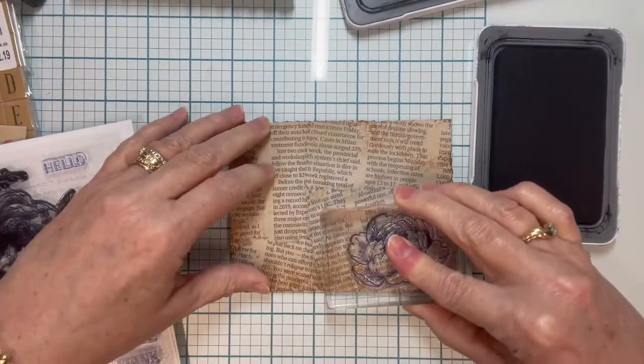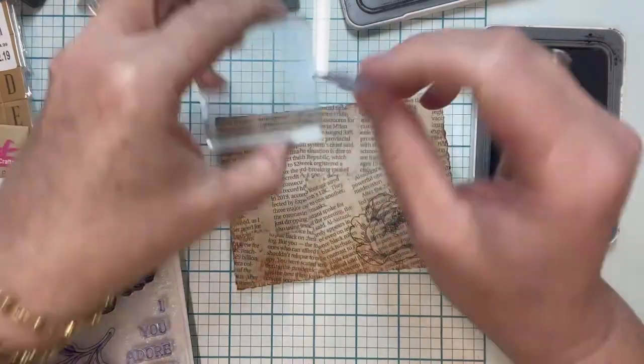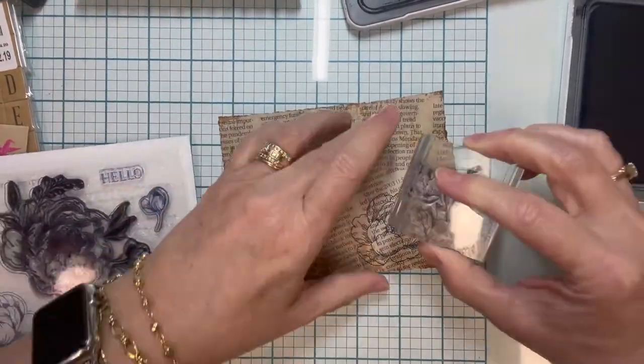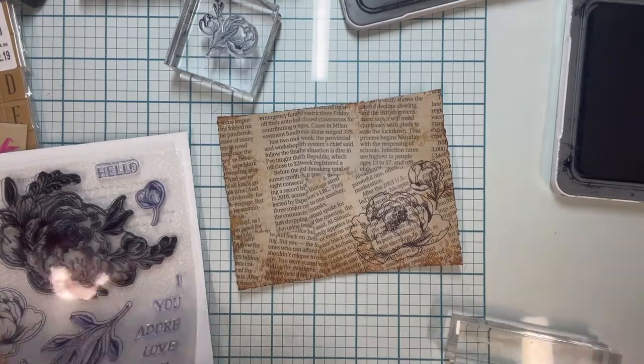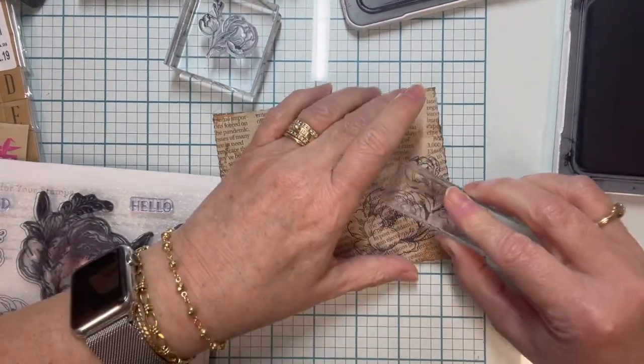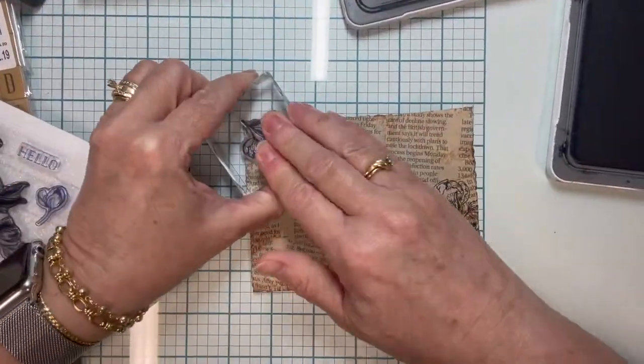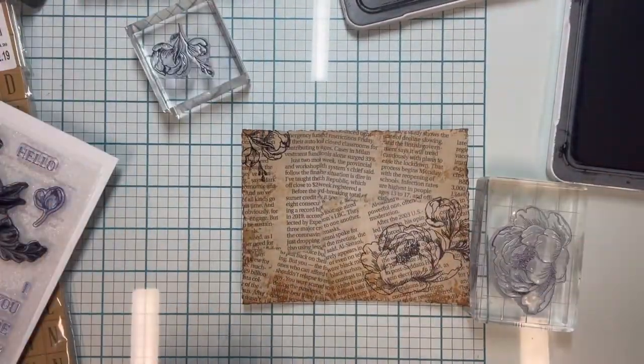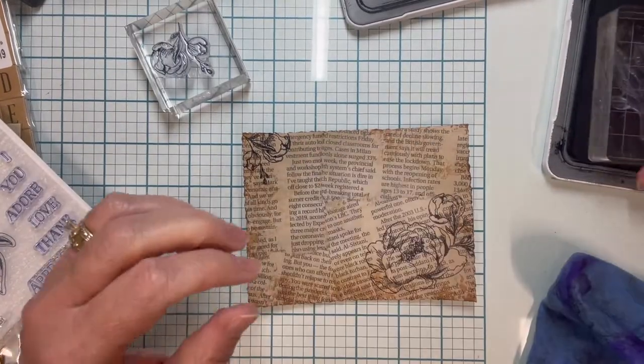And so next I'm just going to go ahead and stamp some images on there. Use whatever you have in your stash. This is a lot of fun because you're just putting some black stamped images on there. I happen to like these peonies, but you can put buildings, you can put just, you know, whatever you have in your stash for this part. It's a lot of fun just to add that different layer of some sort of image onto this newspaper.